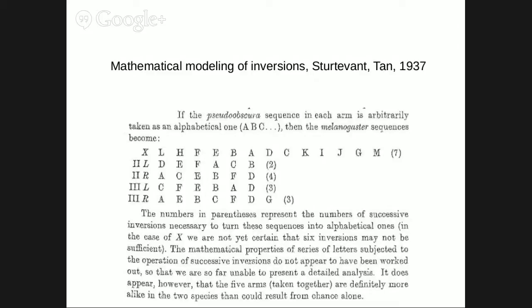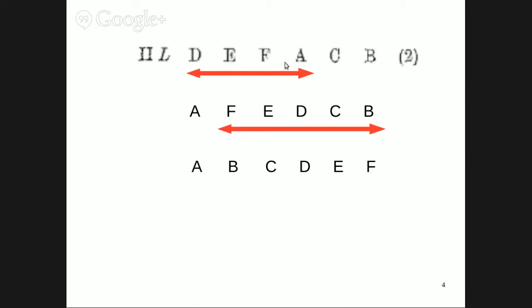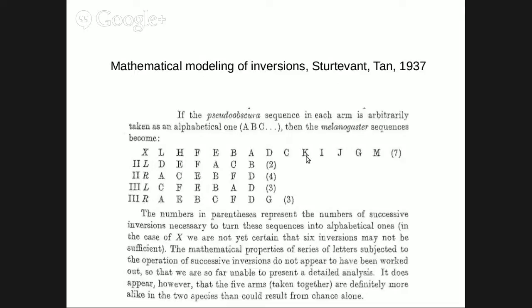You can try a little bit and pause the video. If you want a solution: first reverse A, F, D, E — this gives a new sequence — and then reverse from F to B, and you have the alphabetical order. So even with two events, it's easy to do it, but it's not so trivial; at first it's not easy to find the solution. Now let's try the X chromosome, where it's not two events but seven events.